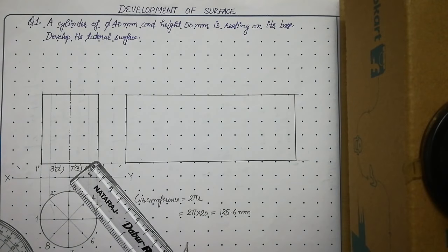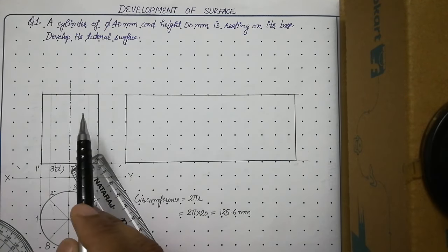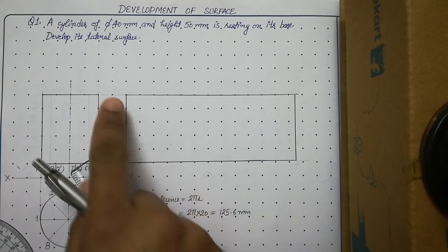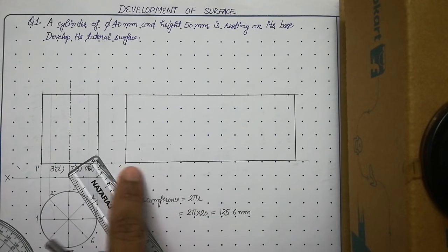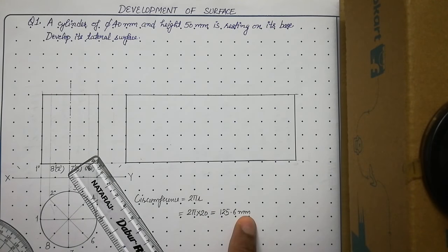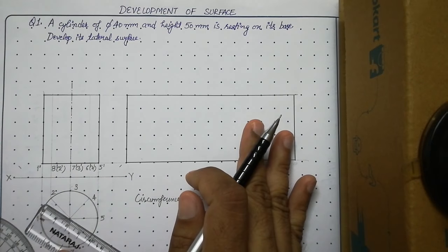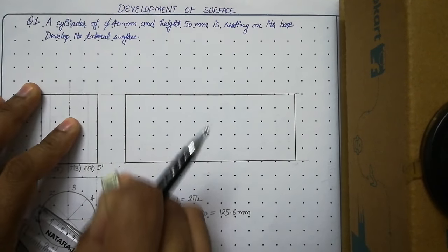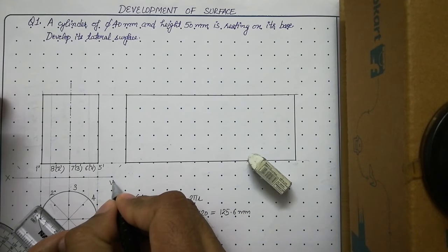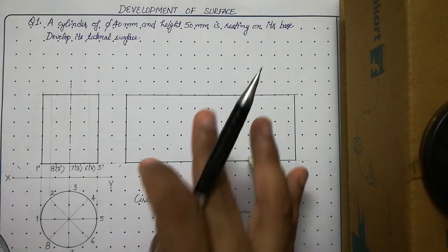The meaning of this is that when we open the surface of the cylinder and lay it flat, we get a rectangular sheet whose length equals the circumference of the cylinder and whose height equals the height of the cylinder. Now in this sheet we have to mark a few more things — we have to show the 8 generators which we used. So show these 8 generators inside the development as well.